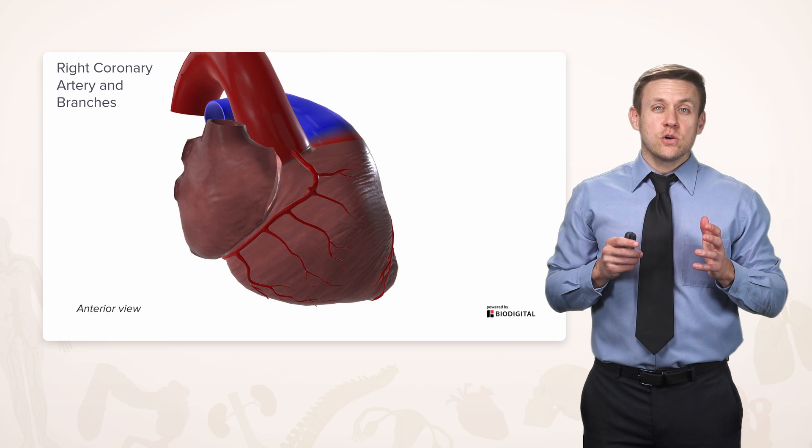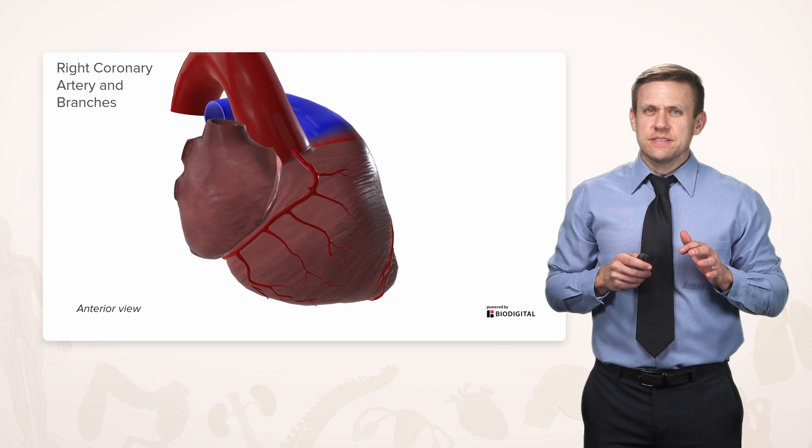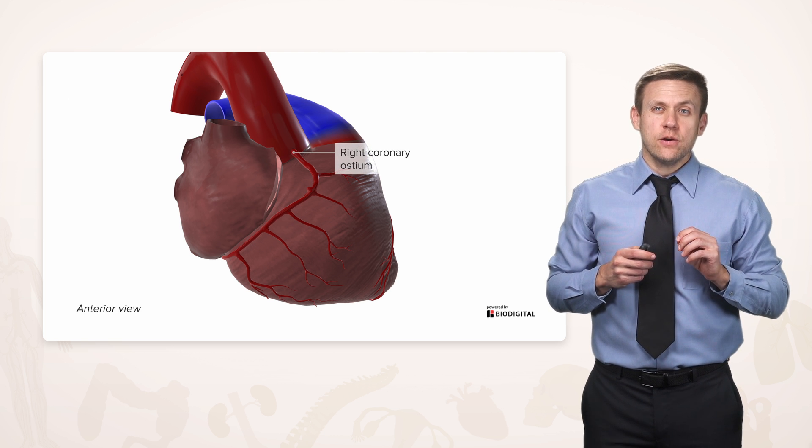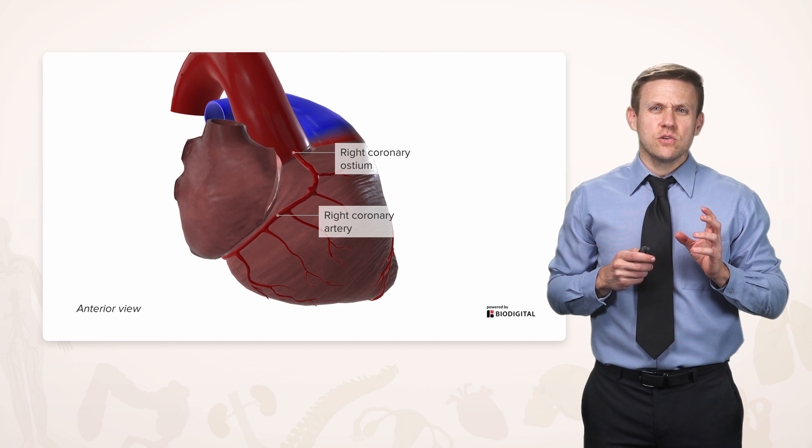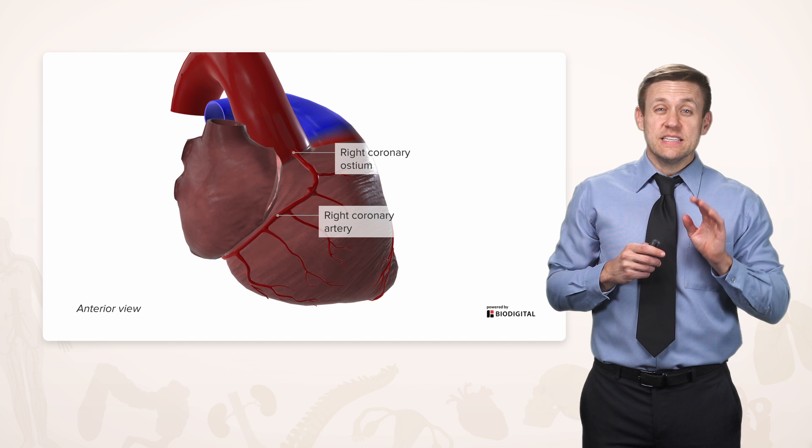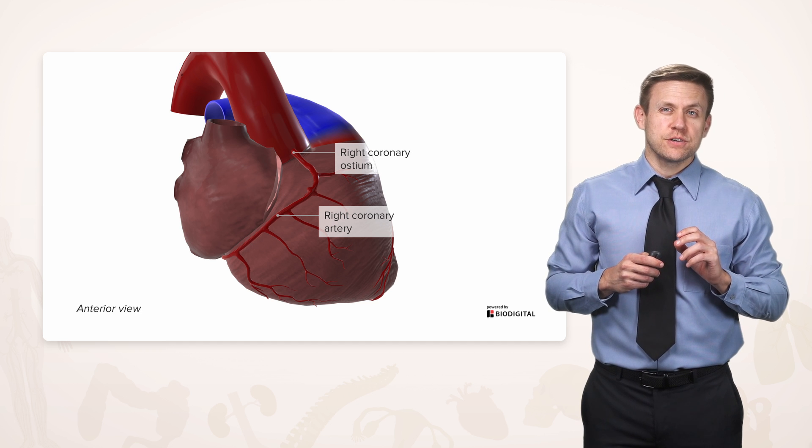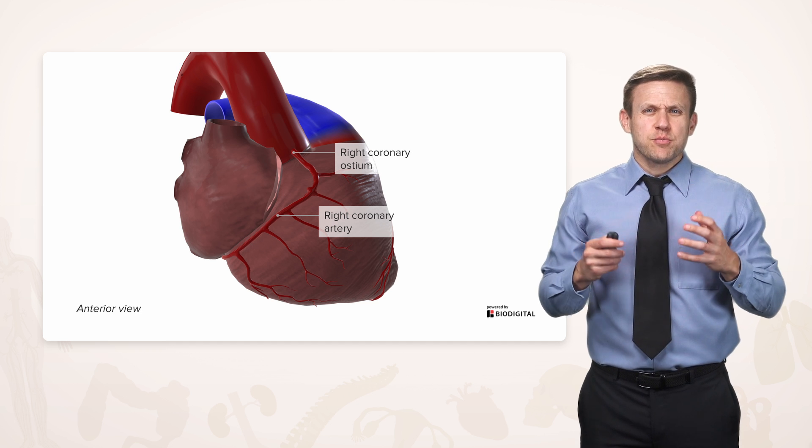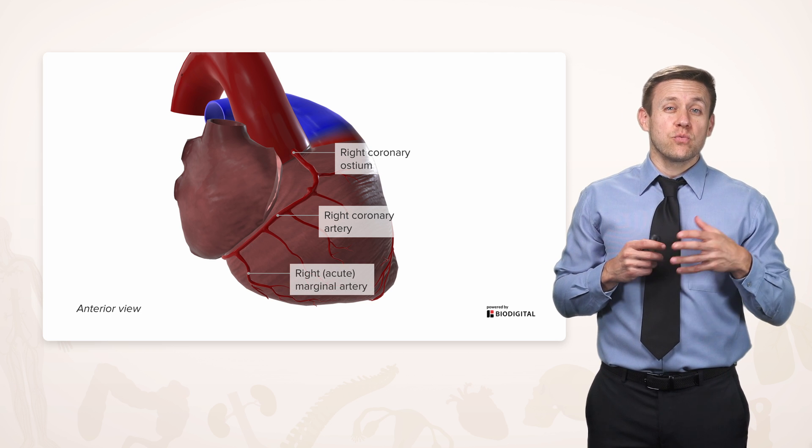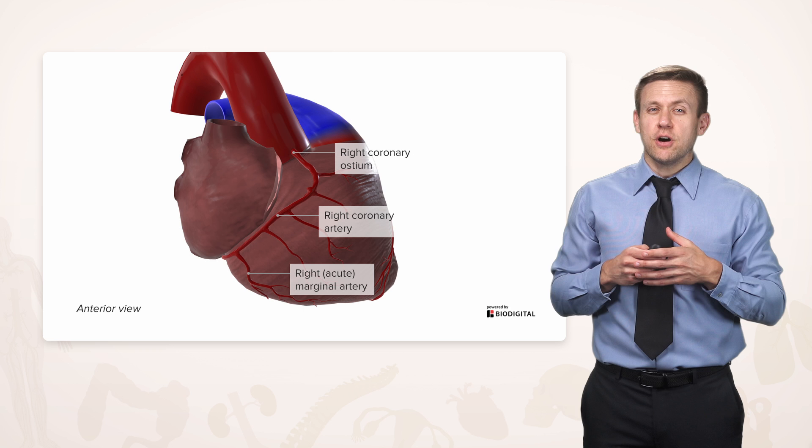Let's look at the right coronary artery and its branches. We have the right coronary ostium on the aorta giving rise to the right coronary artery, going down between the groove that exists between the right atrium and the right ventricle. And it's giving off branches along the way. One such branch we see here is called the right or acute marginal artery.